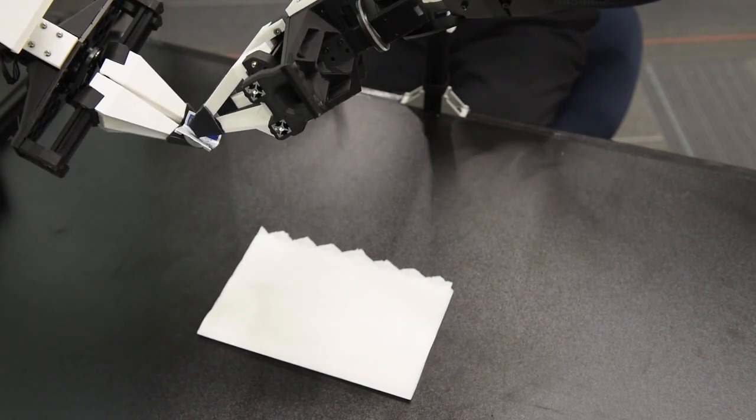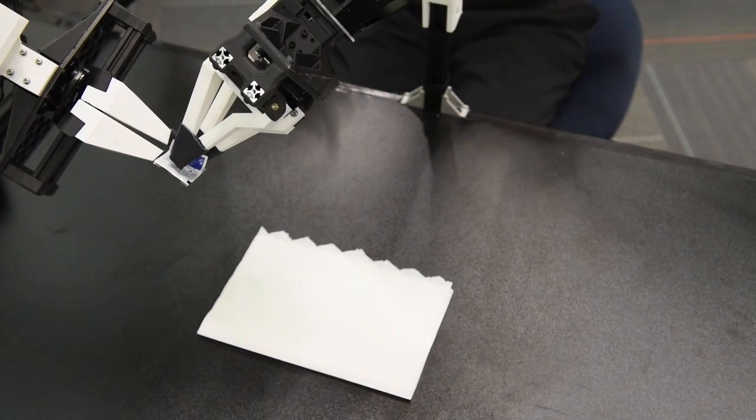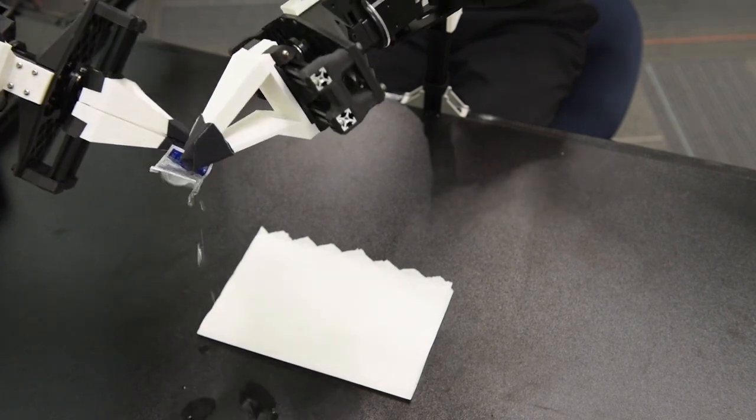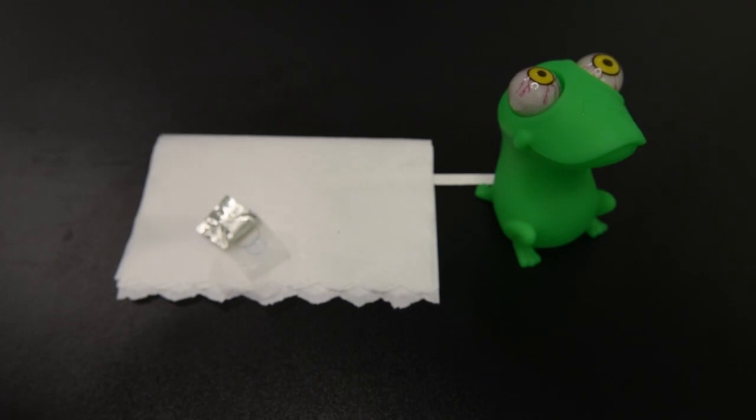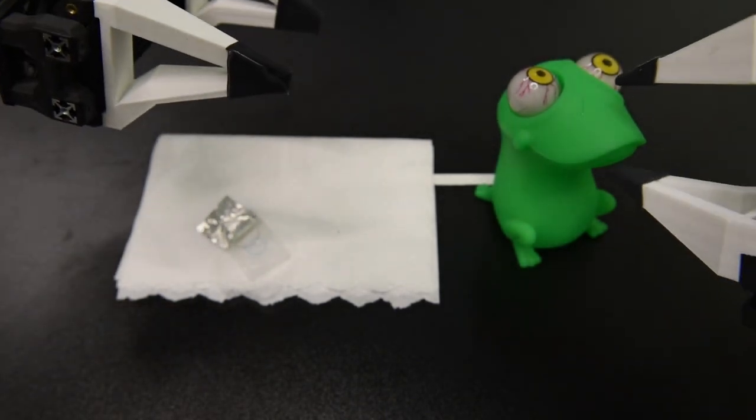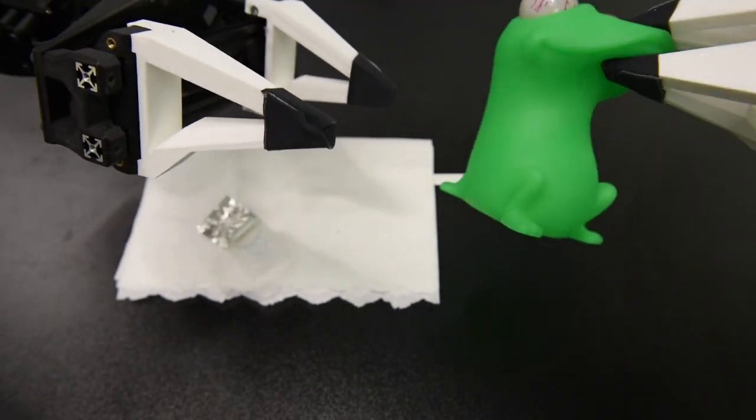Performing these tasks typically requires high-end robots, accurate sensors, or careful calibration, which can be expensive and difficult to set up. Can learning enable low-cost and imprecise hardware to perform these fine manipulation tasks?